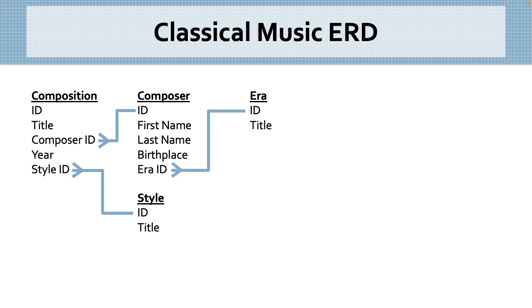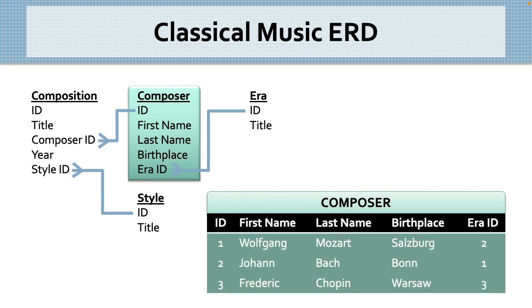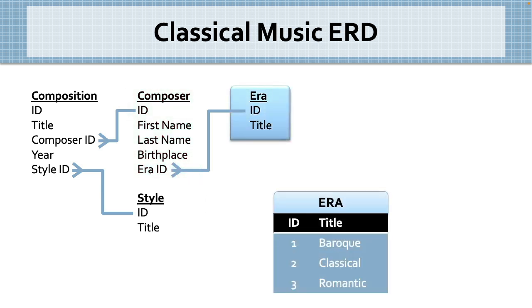It may help to clarify that the ERD is a blueprint or map of the tables and fields in your database, but it does not show any records of actual data. Here's an example of what our composer table might contain once you've built it and entered a few records of data. And, likewise, your ERA table might look like this, once built and populated with data.